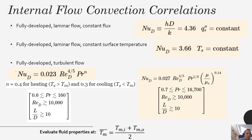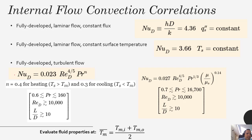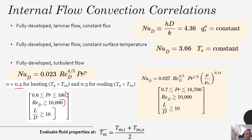One of those relationships is given here. This particular relationship uses an exponent n: n is equal to 0.4 if it's a heating application and n is equal to 0.3 if it's a cooling application. This relationship applies at Prandtl numbers between 0.6 and 160, Reynolds number over 10,000, and L over D — a pipe length at least 10 times longer than its diameter — assuming fully developed turbulent flow where you may be neglecting the entry region.